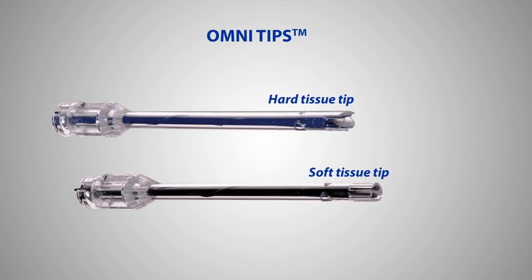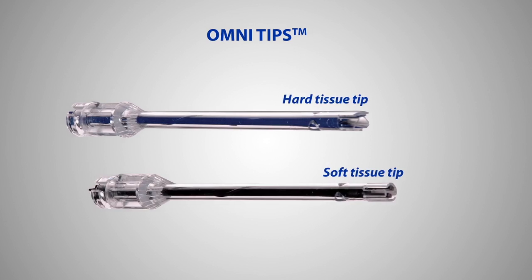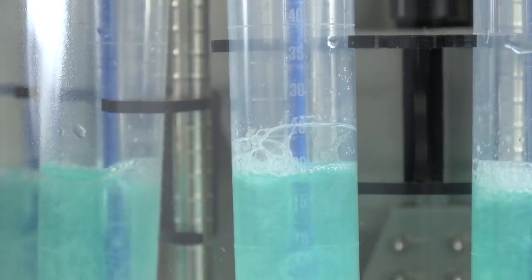When equipped with disposable OmniTip plastic generator probes, sample cross-contamination can be completely eliminated.